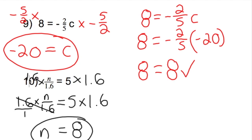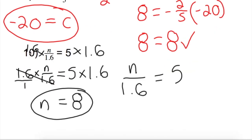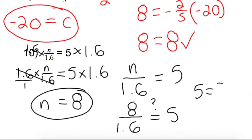Is this correct? Let's find out. Write our original problem and substitute in our solution. Is 8 divided by 1.6 equal to 5? Yes, it is — we are correct. Nice work.